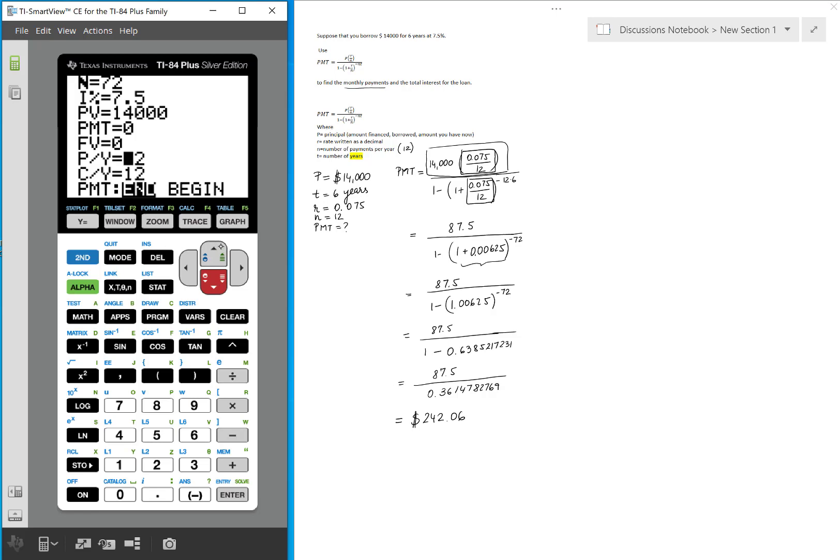And C slash Y, we put 12 as well. So we go to the payments and we press alpha, Enter. And that gives us exactly the same value that we got using the formula.